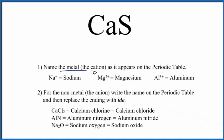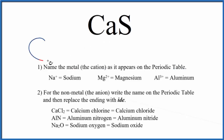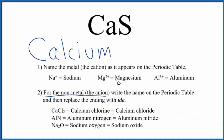First, we'll write the name of the metal — that's the Ca — just as it appears on the periodic table. Ca on the periodic table is calcium. Then we'll write the name for the nonmetal, that's the S, the sulfur, just as it appears on the periodic table as well.